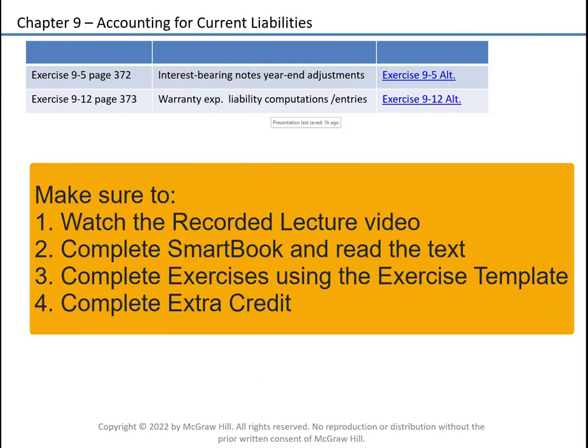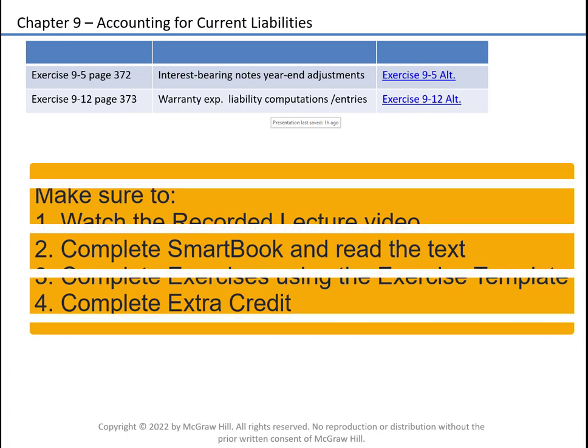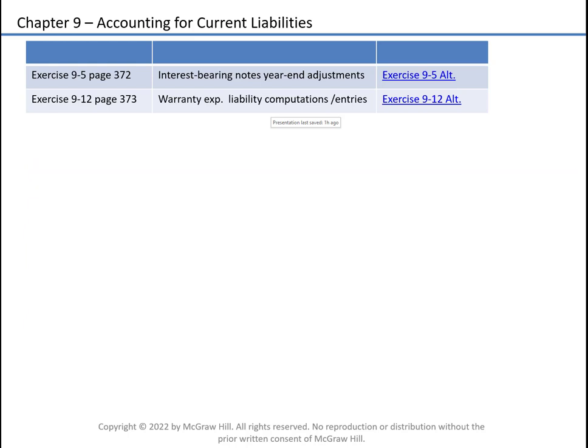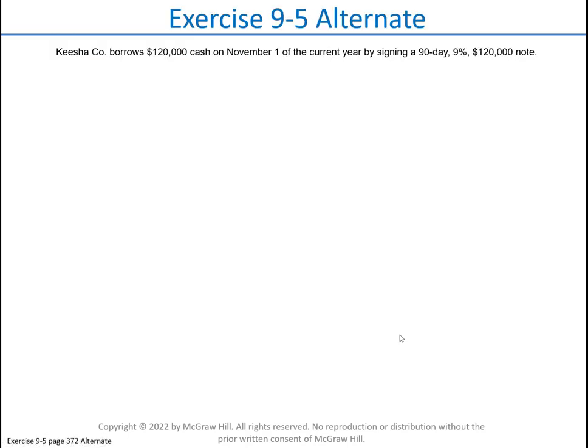In this video I will review two of the Chapter 9 alternate exercises. Chapter 9 is on accounting for current liabilities. Exercise 9-5 says that this company borrowed $120,000 in cash from the bank in the current year, and they signed a 90-day, nine percent, $120,000 note.